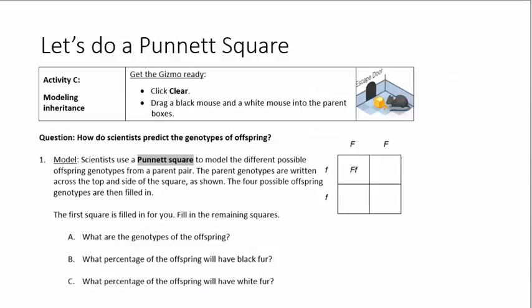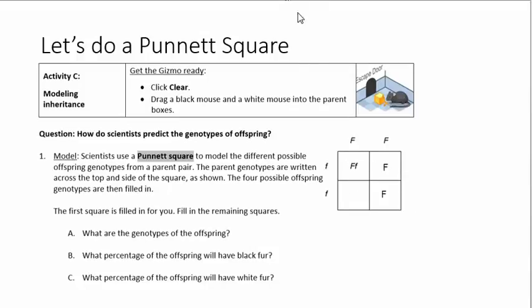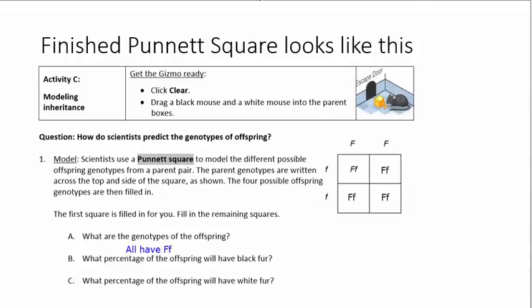Okay, now let's take a look at activity C and do a Punnett square. This square on the right hand side is called a Punnett square. The very first thing we do is bring down this F into each box below. Same on the other side. And then we would bring this little f across into each box. And the finished Punnett square would look like this.